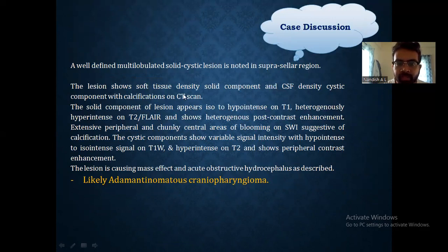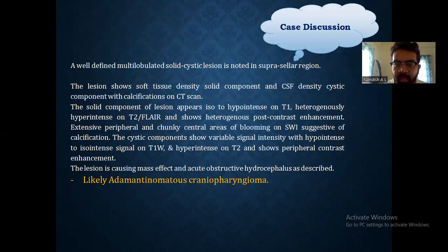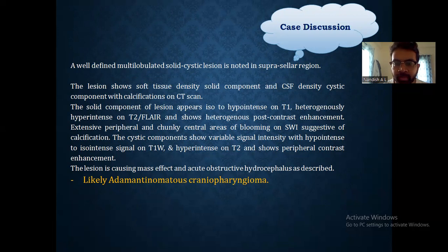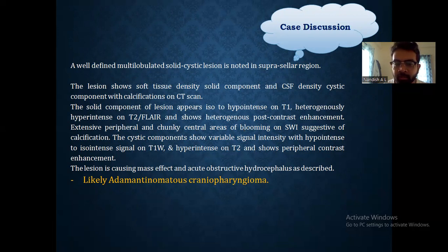The lesion shows soft tissue density solid component and near-CSF intensity cystic component with calcifications on CT. The solid component appears iso to hypointense on T1, heterogeneous on T2, and shows heterogeneous post-contrast enhancement. It shows peripheral and chunky central areas of blooming indicating calcification. The cystic component shows variable signal intensity, hypointense to hyperintense on T1, hypointense on T2, and shows peripheral contrast enhancement. The lesion is causing mass effect and acute obstructive hydrocephalus, consistent with adamantinomatous craniopharyngioma.